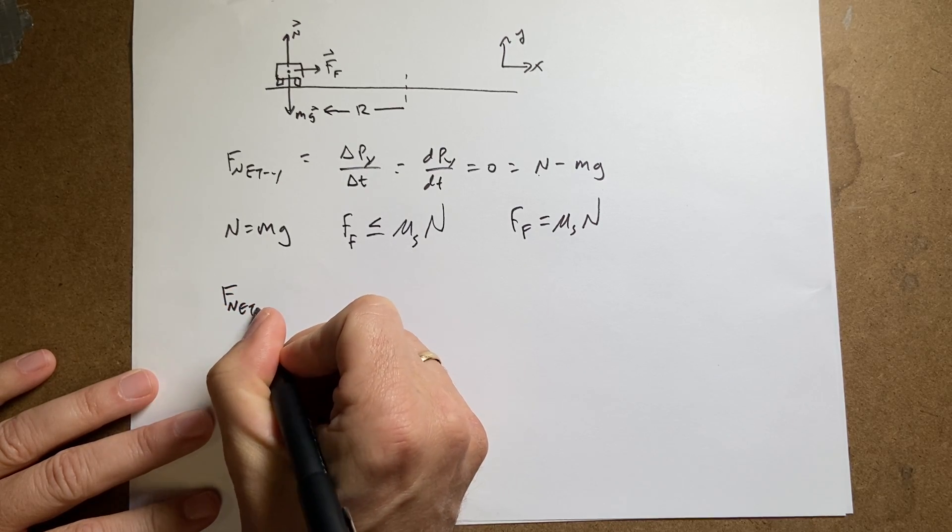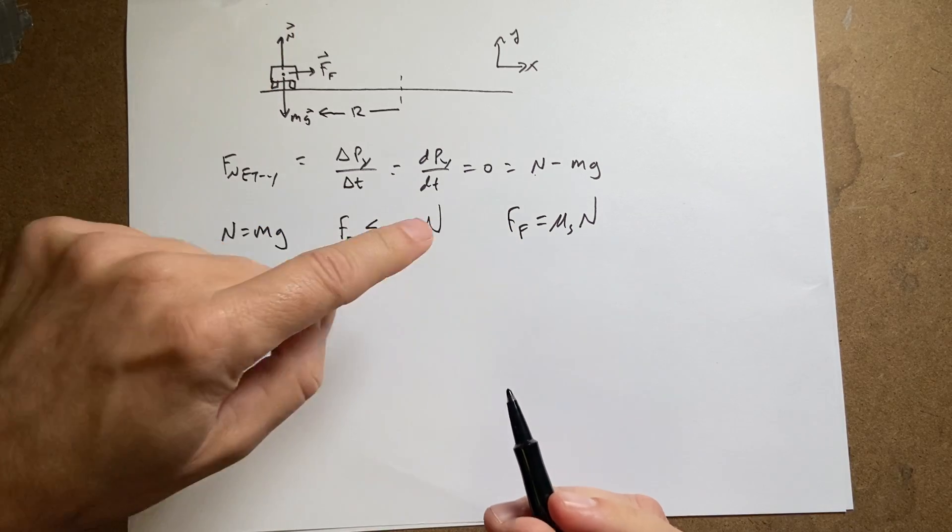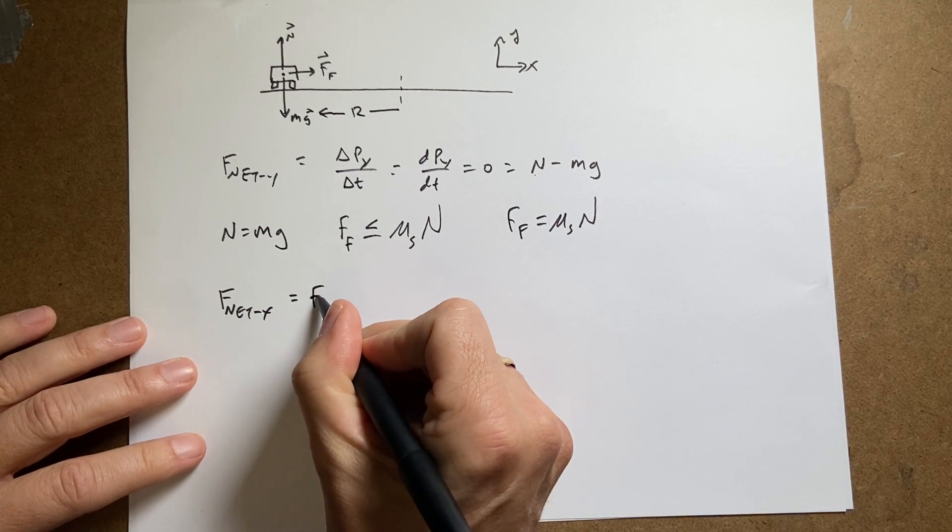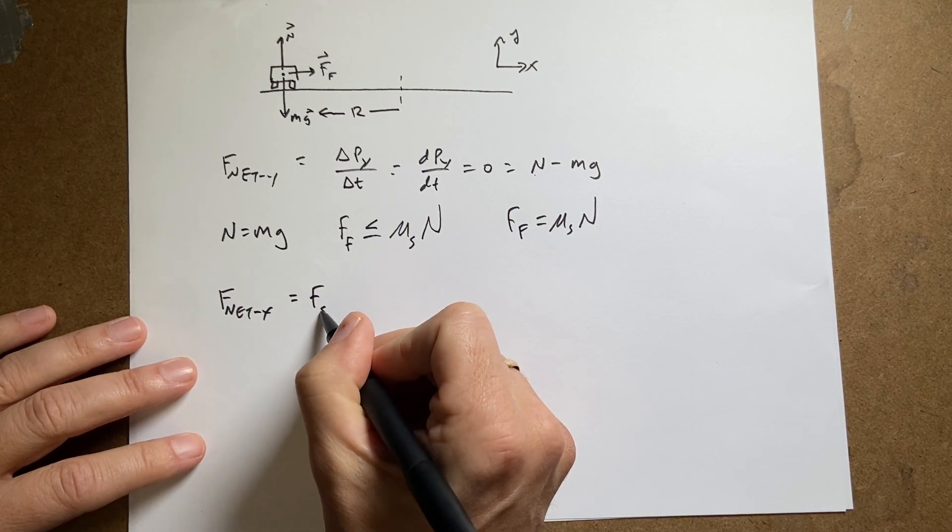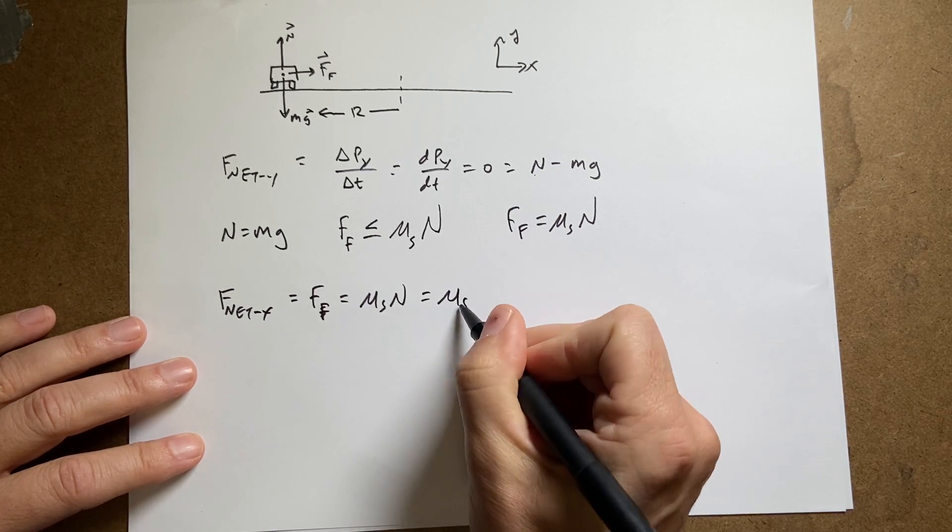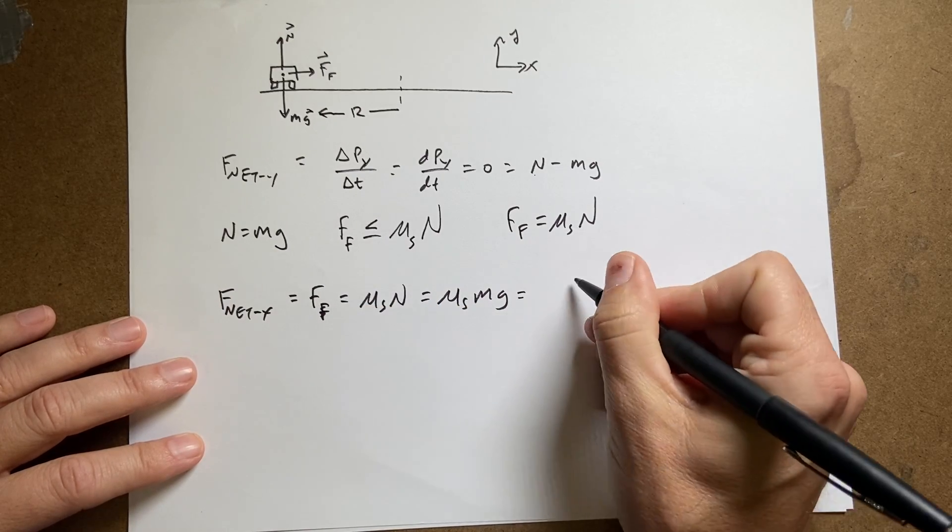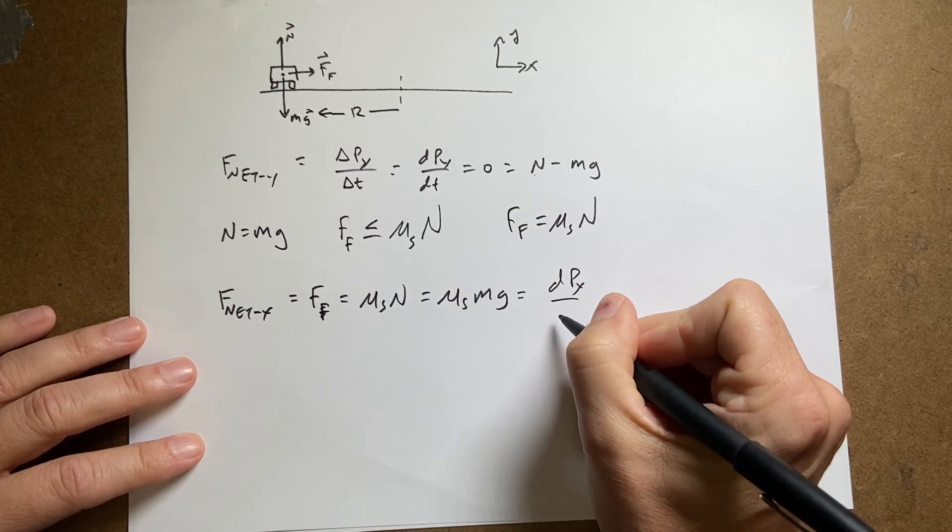Now we can look at f net in the x direction. F net x equals, well there's only one force in the x direction and that's this. So it's ff. And that's going to be equal to mu s times n, which is mu s times mg because n is equal to mg. And that's going to be dpx/dt.